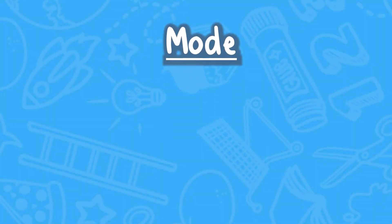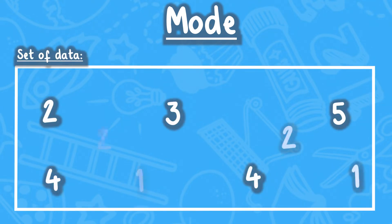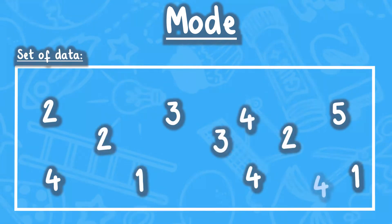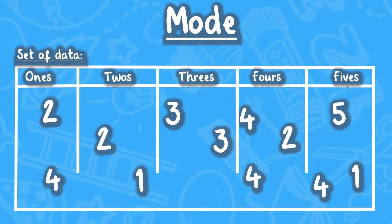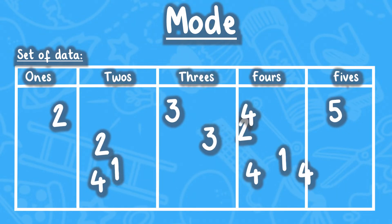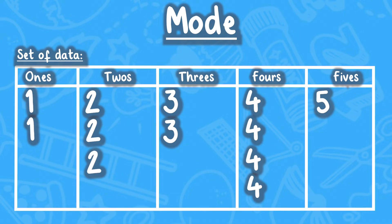To find the mode, all you need to do is find the most frequently occurring number in a set of data. To do this, you can group the data by the same numbers and find which one has the highest amount.